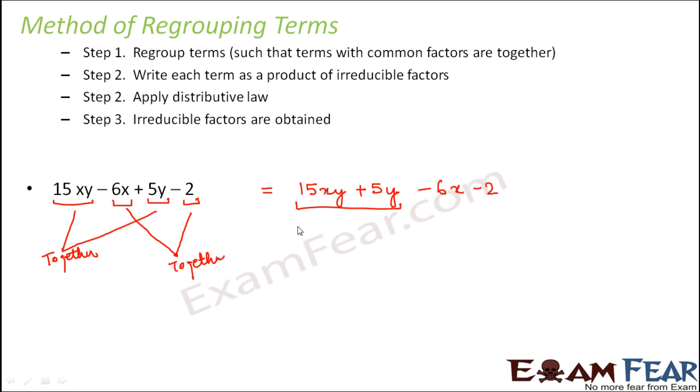So 15xy can be written as 5 into 3 into x into y plus 5y. Similarly, 6x can be written as 2 into 3 into x and 2 can be written as 2. Now first compare these two terms. In these two, what is in common between these two terms?